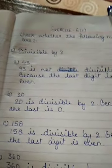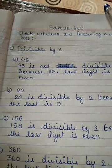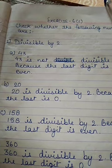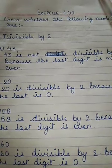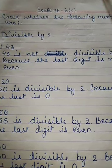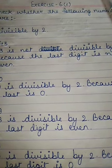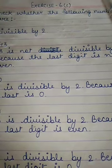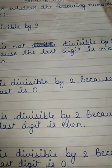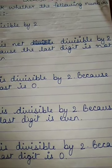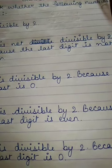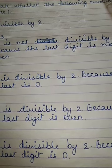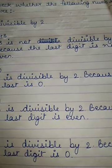The first question of this exercise is: check whether the following numbers are divisible by 2. In this question, we have to check the divisibility by 2 — whether the numbers given are divisible by 2 or not. Let's recall the rule: if the last digit of the number is even, or the number ends with 0, 2, 4, 6, or 8, then the number is divisible by 2.